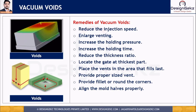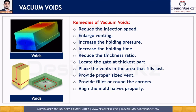In areas where a fillet is not specifically mentioned, we can apply a nominal fillet of 0.3 mm to 0.5 mm. Only the parting line area will remain as a sharp edge.